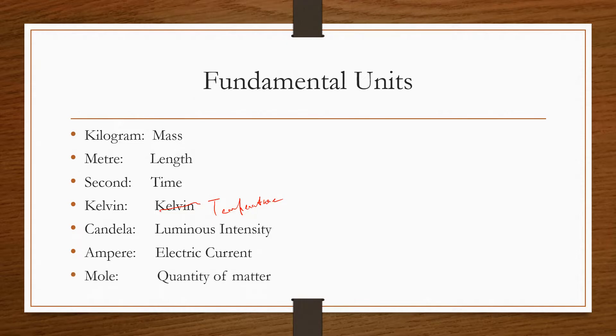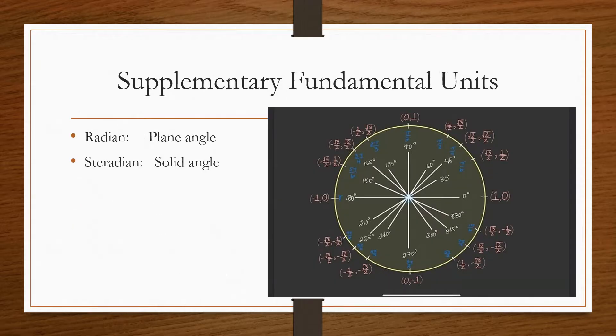Mole unit of quantity of matter. These are the seven fundamental units. Now, there are two supplementary units, that is radian of plane angle, radian of solid angle. So these seven plus two fundamental plus supplementary units, these are the SI units.